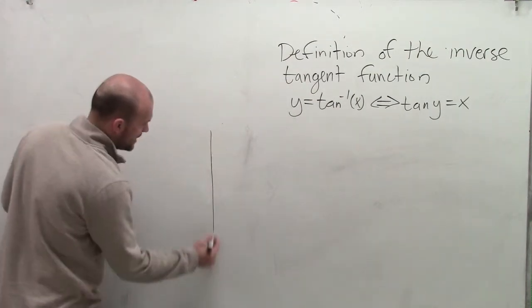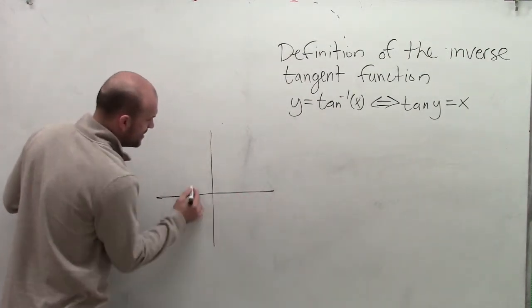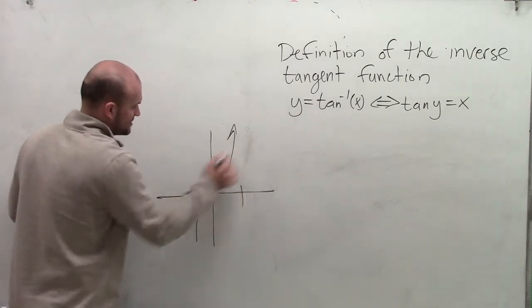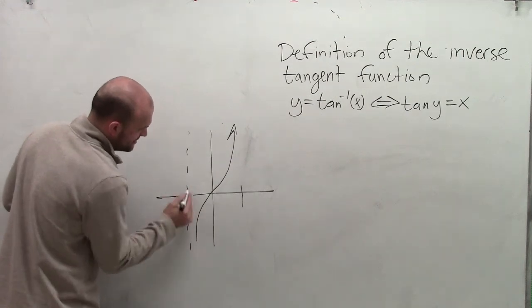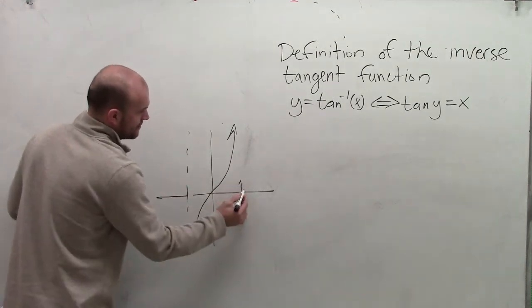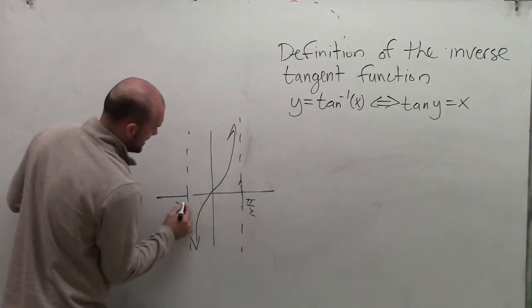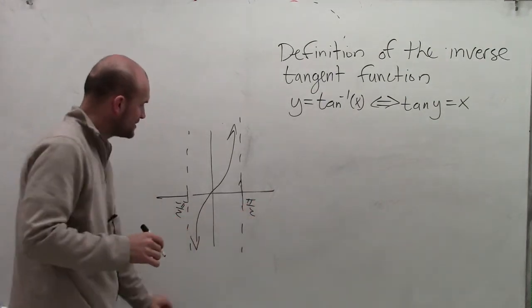So to do that, let's go and take a look at our tangent function. Now remember the tangent function is going to look something like this, where it's going to have vertical asymptotes at pi-halves and at negative pi-halves. And when graphing,